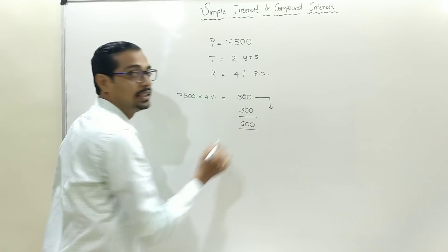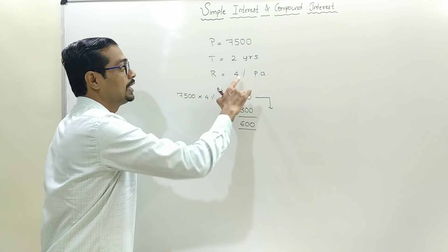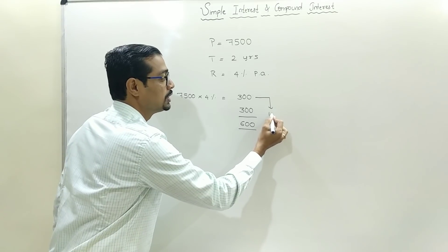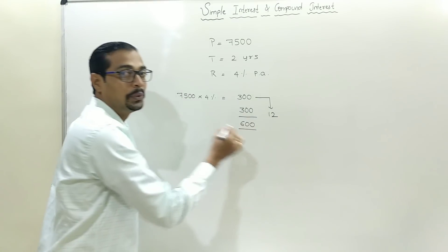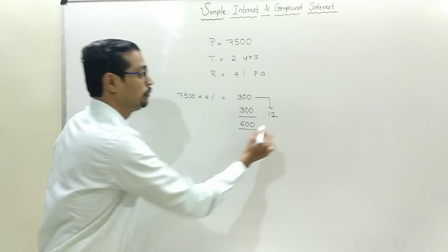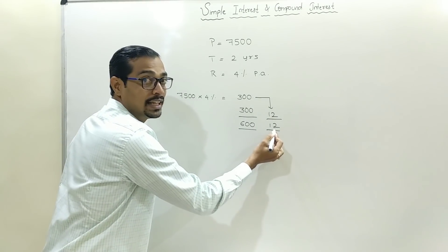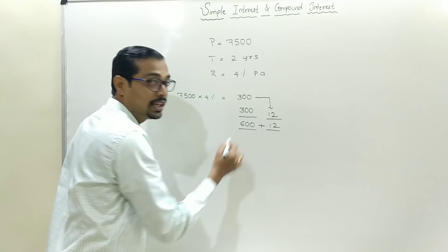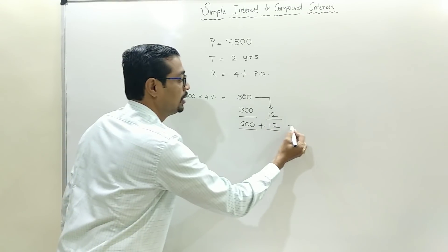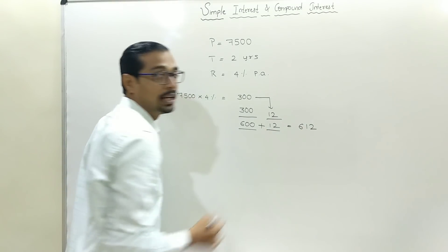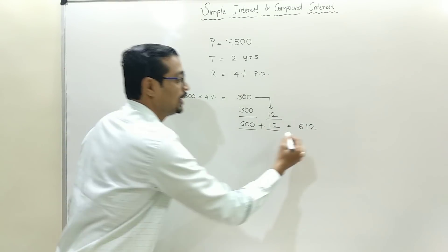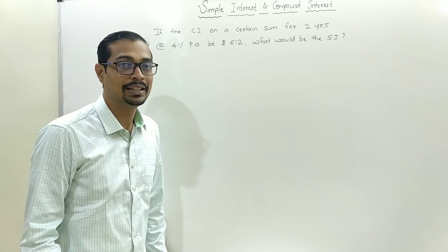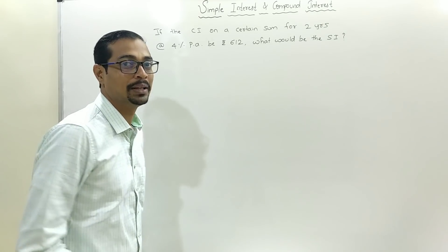On 300, calculate 4% — that is 12. It is the difference. If we add to get the total 612, that is compound interest. Moving with the same example.